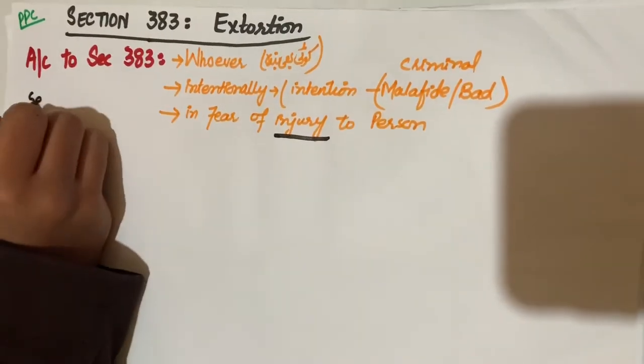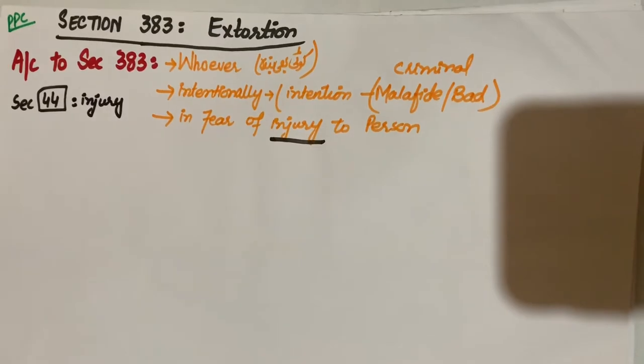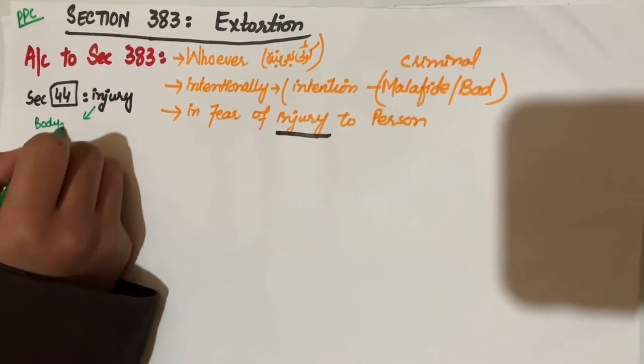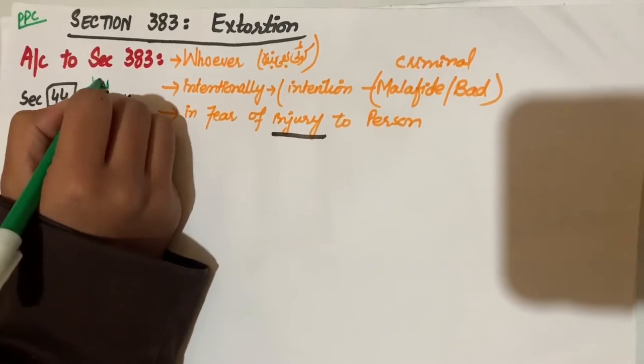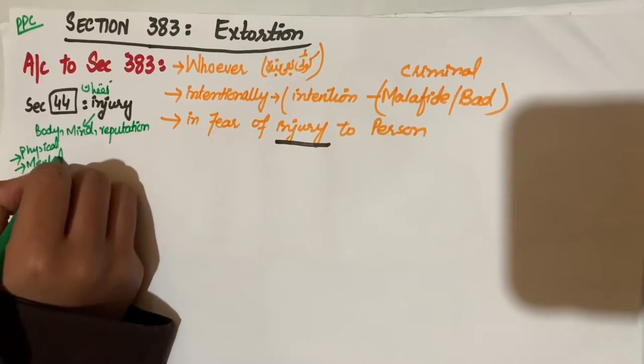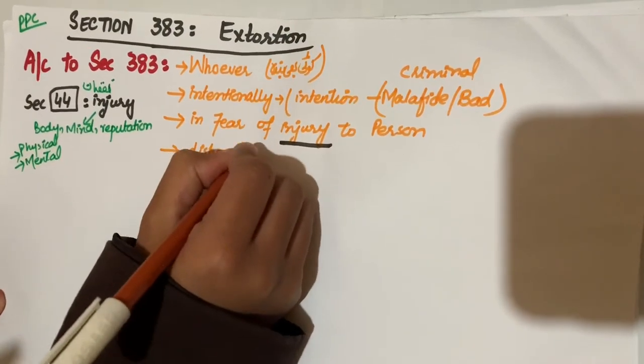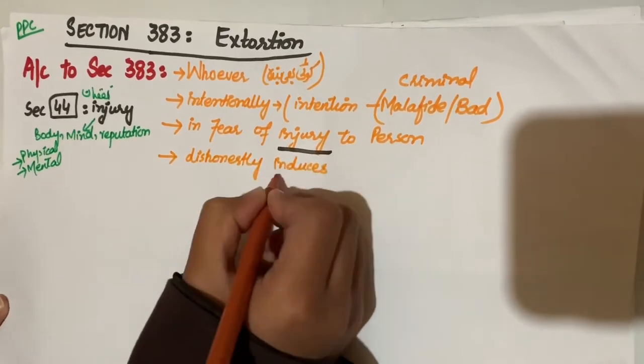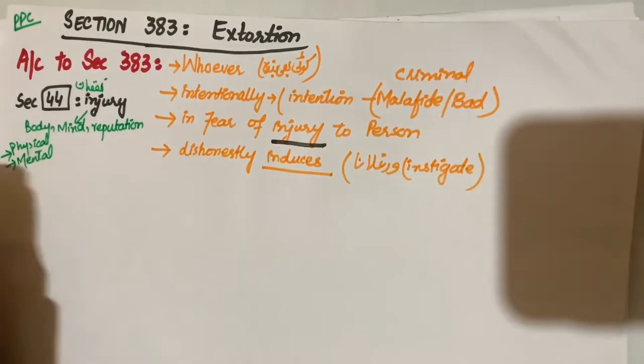Injury kahan pe discuss hua, Section 44 ke under. Injury kya hai - any illegal hurt caused to body, mind and reputation of any person. Isko hum injury kehte hain. Injury ko abh humare paas physical bhi ho sakti hai aur mental injury bhi ho sakti hai. To fear of injury cause karke wo agle bande se kya karta hai, dishonestly induces means agle bande ko instigate kar raha hai, usko induce kar raha hai.